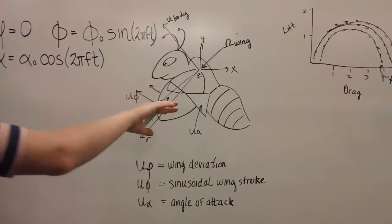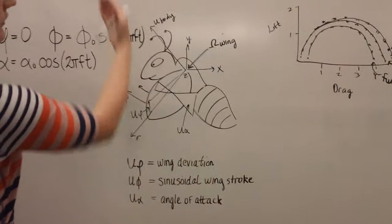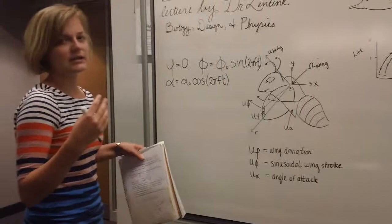And lastly, you have u alpha, as in the angle of the wing as it goes each direction. This is the origin right here. This is y, x, and z direction. And this is the direction the fruit fly is actually flowing or going.